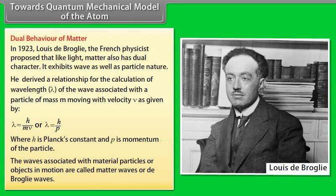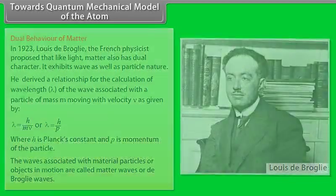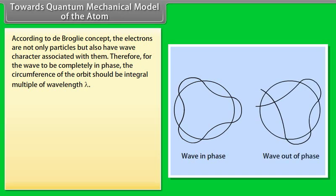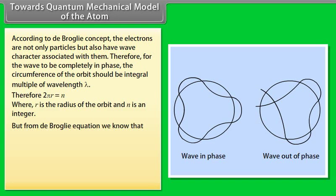The waves associated with material particles or objects in motion are called matter waves or de Broglie waves. According to the de Broglie concept, electrons are not only particles but also have wave character associated with them. Therefore, for the wave to be completely in phase, the circumference of the orbit should be an integral multiple of wavelength lambda. From the de Broglie equation, lambda = h/mv, hence 2πr = n(h/mv), where mvr = n(h/2π).